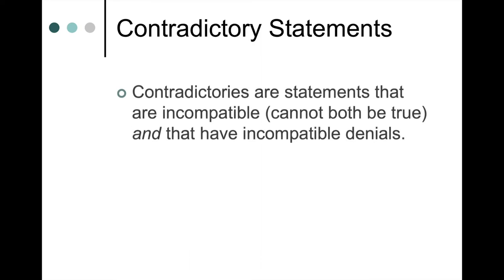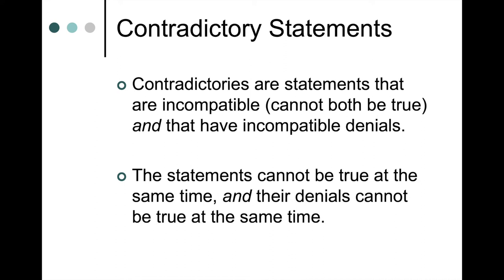A particular species of incompatible statements are what we call contradictory statements. Contradictory statements are statements that are incompatible — they cannot be true at the same time — and they also have incompatible denials. The idea of denial is what makes a statement untrue. For example, if I say 'I'm a professor at the University of New Hampshire,' the denial would be 'I'm not a professor at the University of New Hampshire.' So contradictories are statements that are incompatible, and their denials are also incompatible.